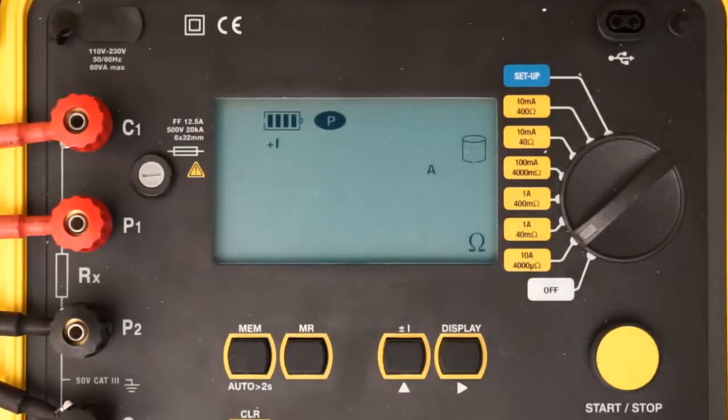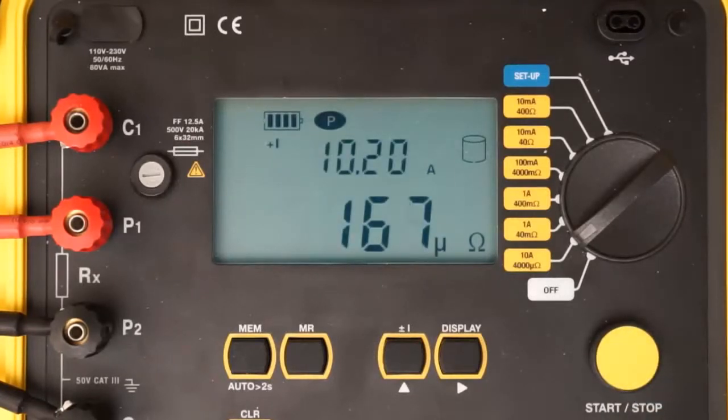To begin the test, press the start-stop button once. After a moment, the resistance and current measurements appear in the LCD. As you can see, current is slightly over 10 amps, and resistance is approximately 167 micro-ohms. Note that you can also display the test voltage by pressing the display button. In our example, test voltage is approximately 1.7 millivolts.